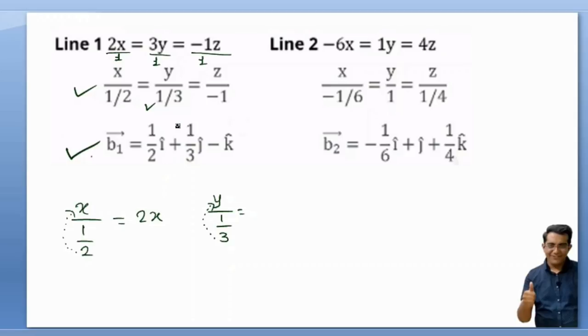So basically our first line will be represented like this. Our second line will be represented like this. You need to remember one thing: you can simplify this denominator by multiplying it with the LCM that is 6. So it would look like 6/2 that is 3, 6/3 that is 2, and -6. You can write it like this also, it also works and this is also correct. Both are correct.